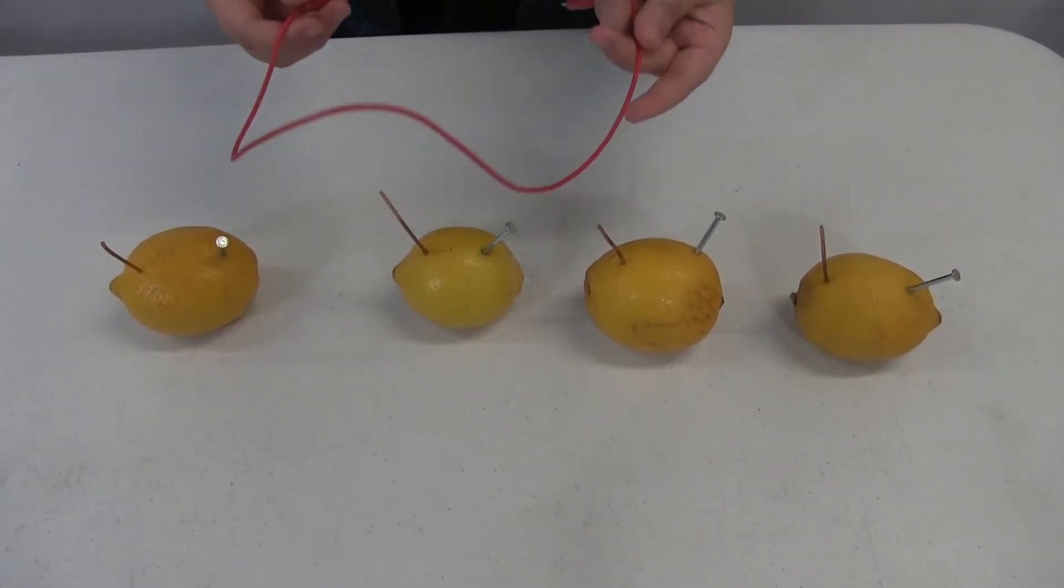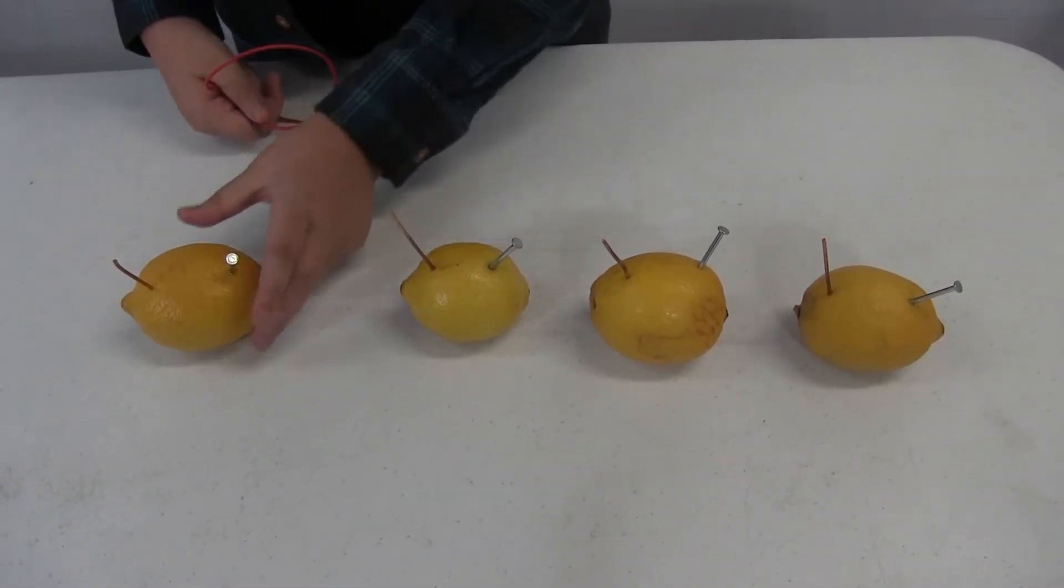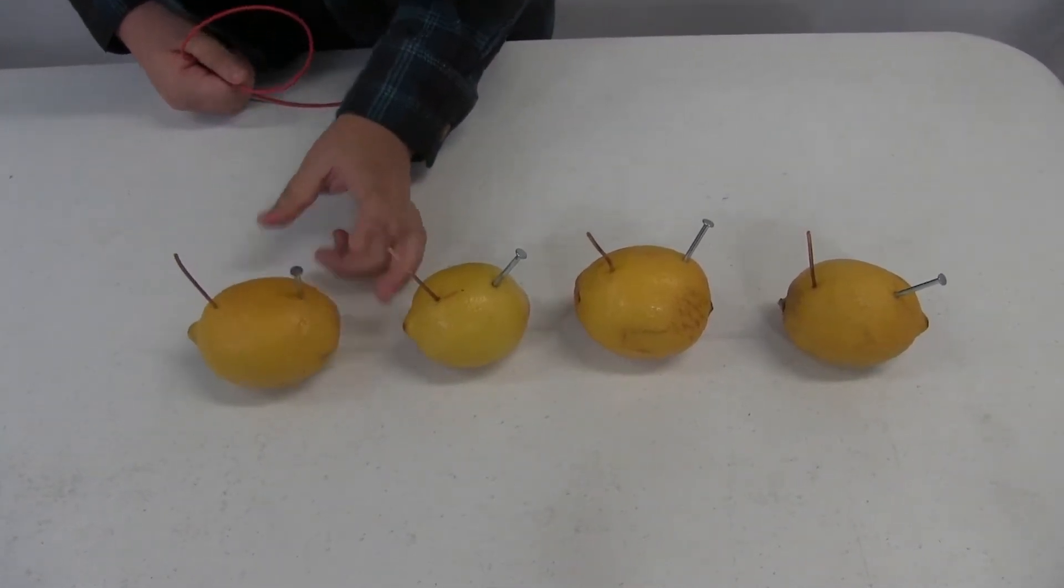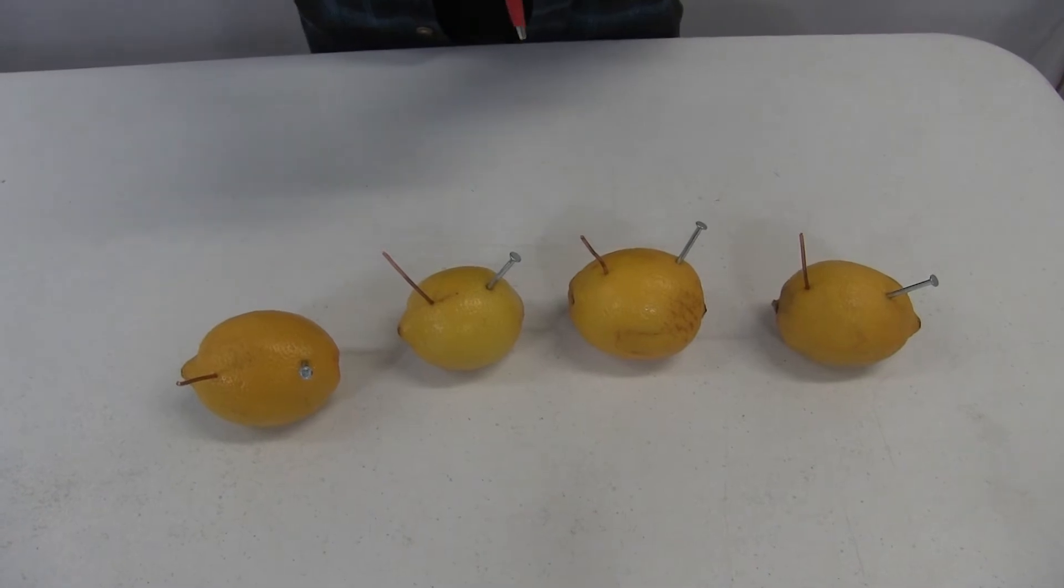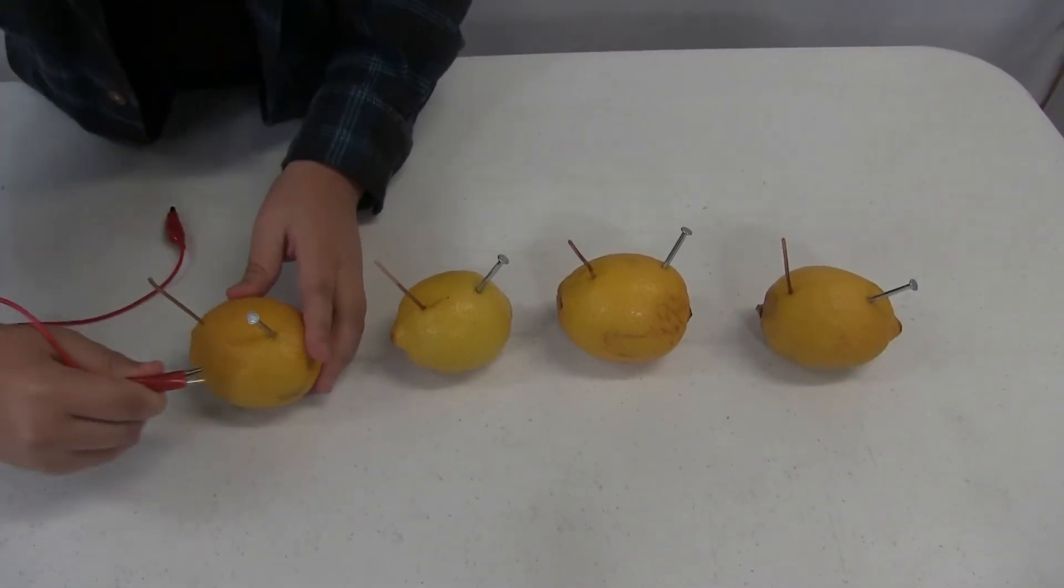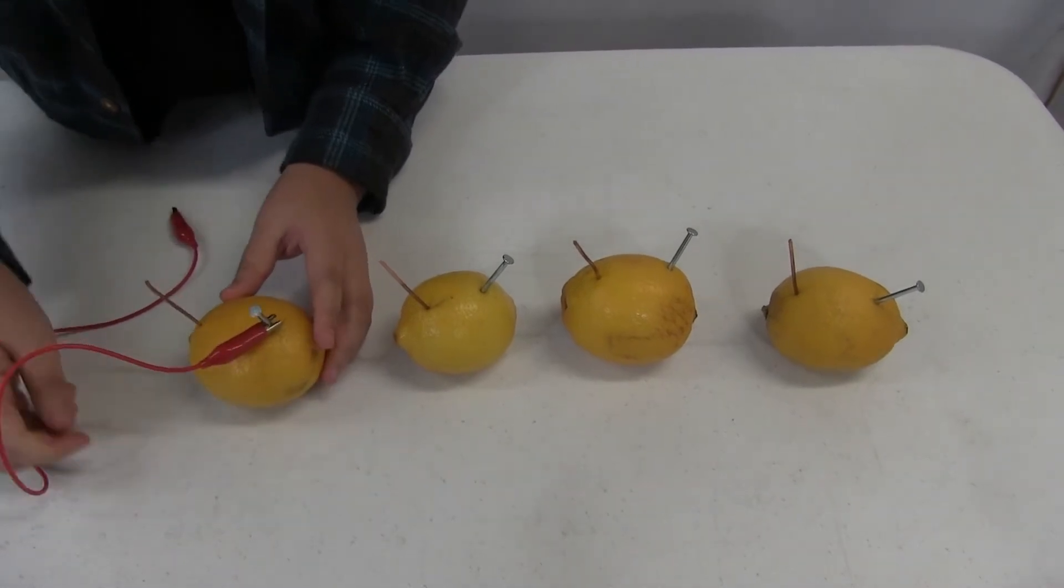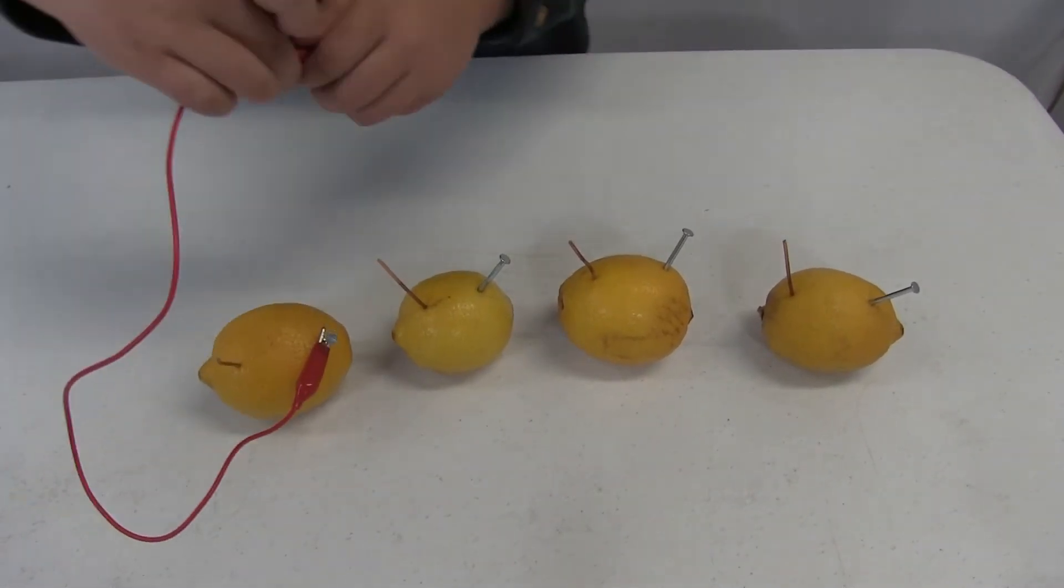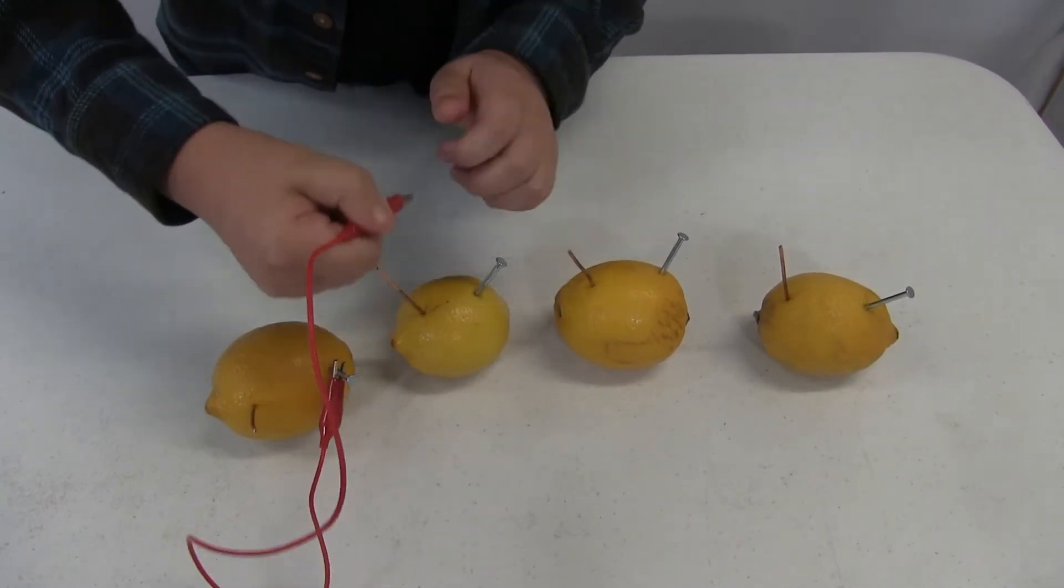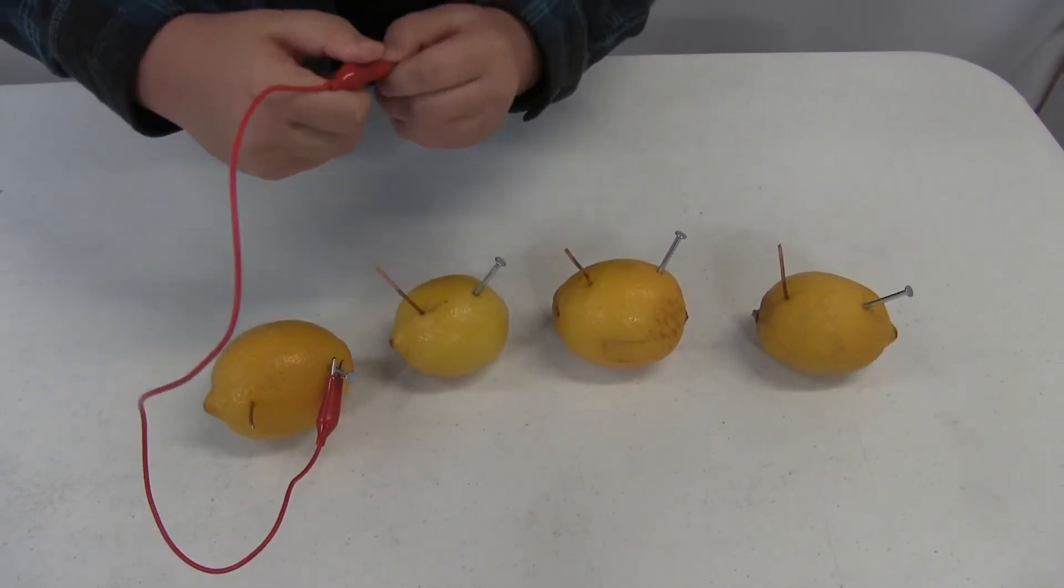So now for this third step, now that you have all your plumpy juicy lemons with antennas, you can use alligator clips. And for the example, for the first alligator clip, we're going to put one onto the zinc. And we're going to put the second alligator clip onto the second lemon copper.